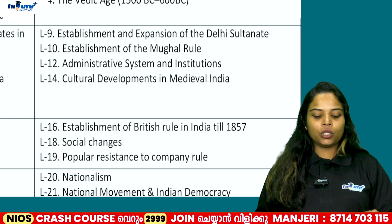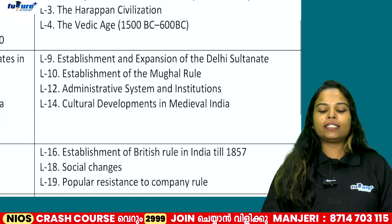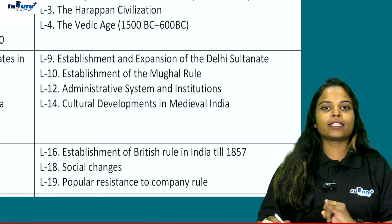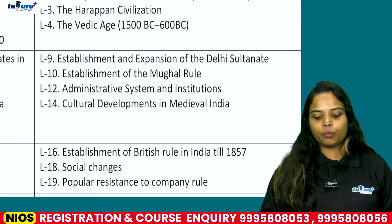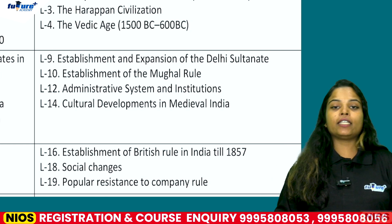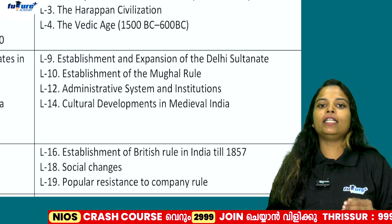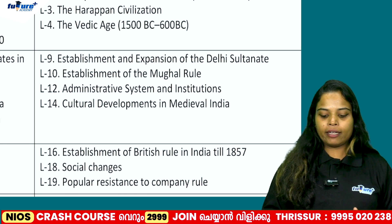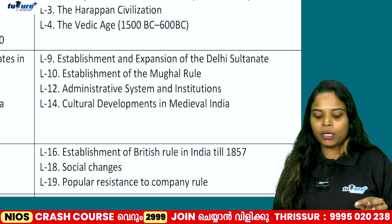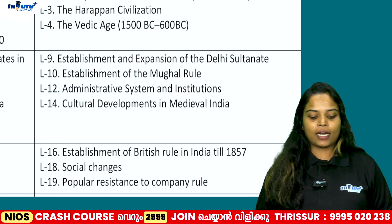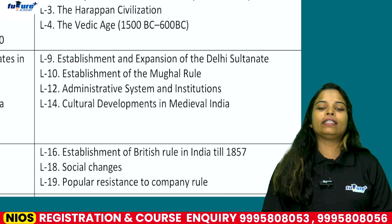The next module is the 9th chapter, which is the Establishment and Expansion of Delhi Sultanate. It is the 10th, 12th, and 14th chapters. The 10th chapter is the Establishment of Mughal Rule. The 12th chapter is the Administrative System and Institutions. The 14th chapter is Cultural Development in Medieval India.